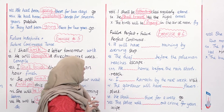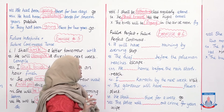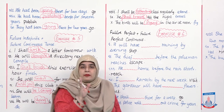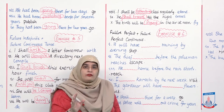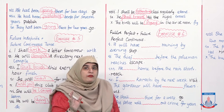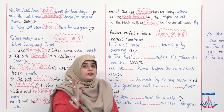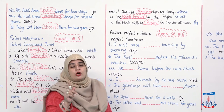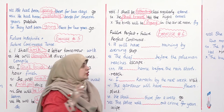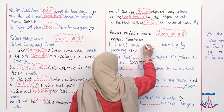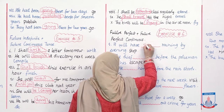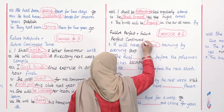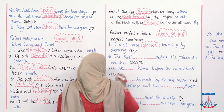'It will have ___ raining by the evening.' When 'have' is present, the verb takes its third form (participle). Stop ka third form kya hai? Stop, stopped, stopped. Answer: 'It will have stopped raining by the evening.'